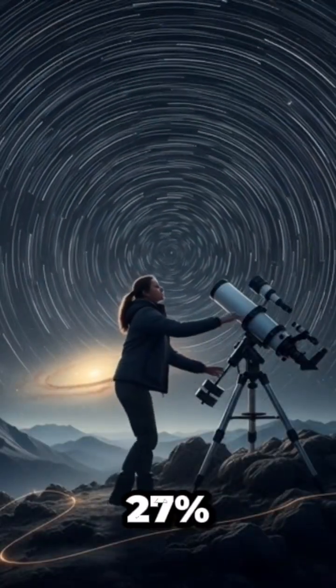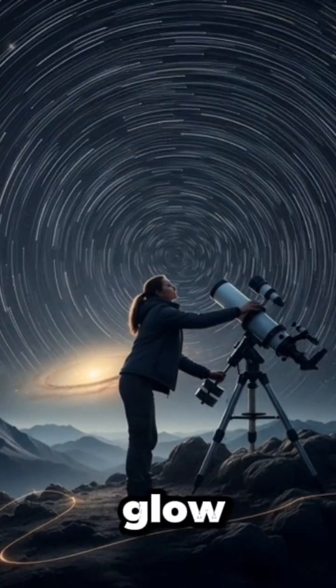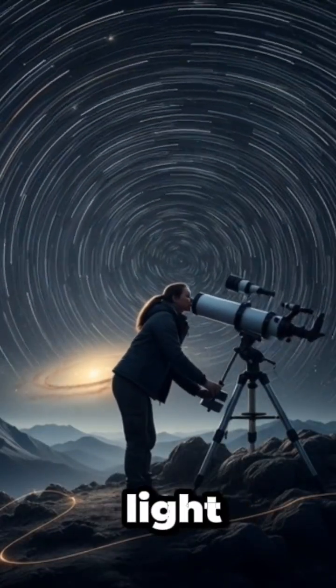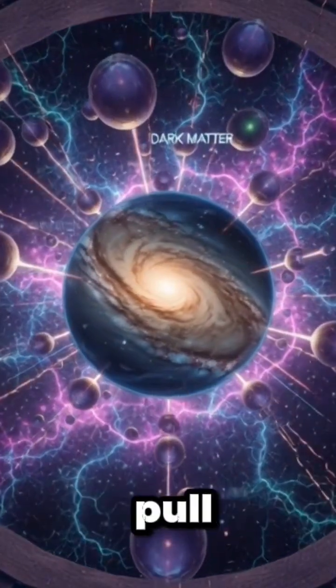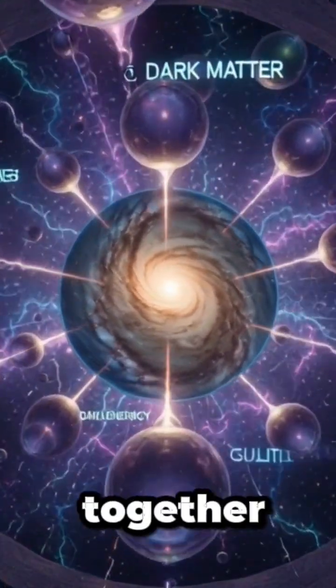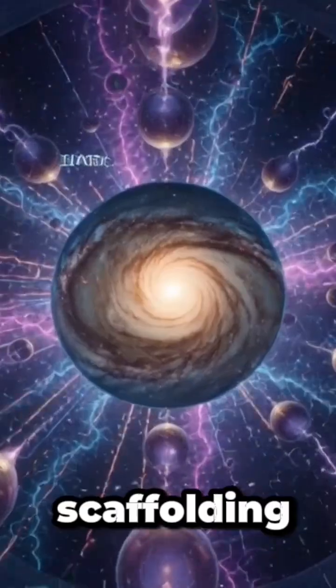First, dark matter, about 27% of the total. It doesn't glow. It doesn't reflect light. But its immense gravitational pull holds entire galaxies together. It's the universe's invisible scaffolding.